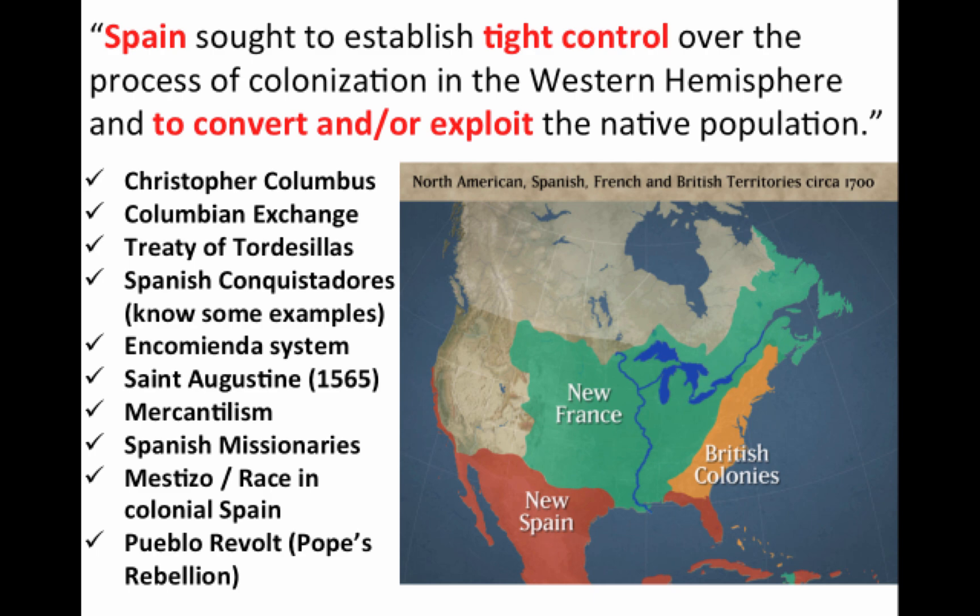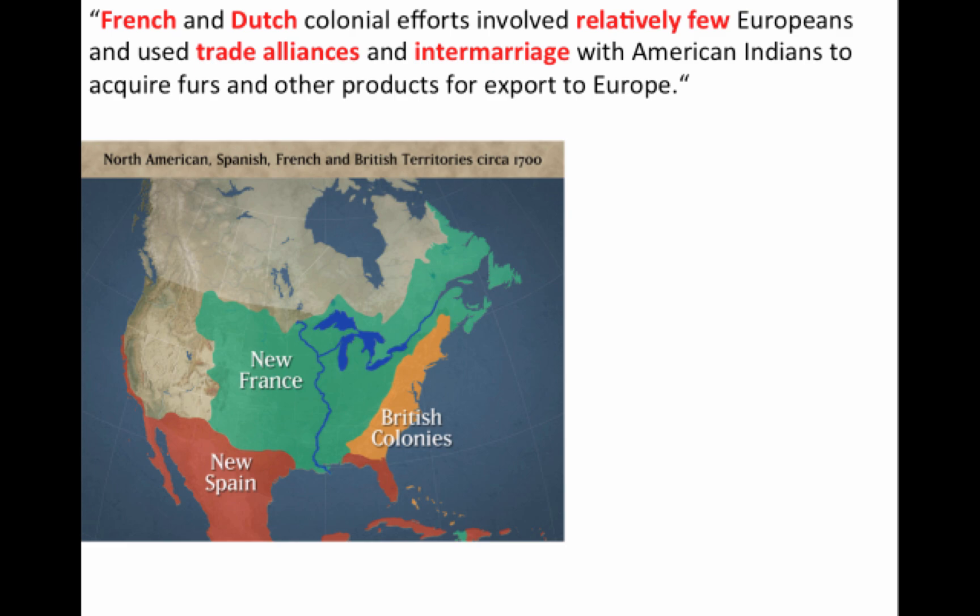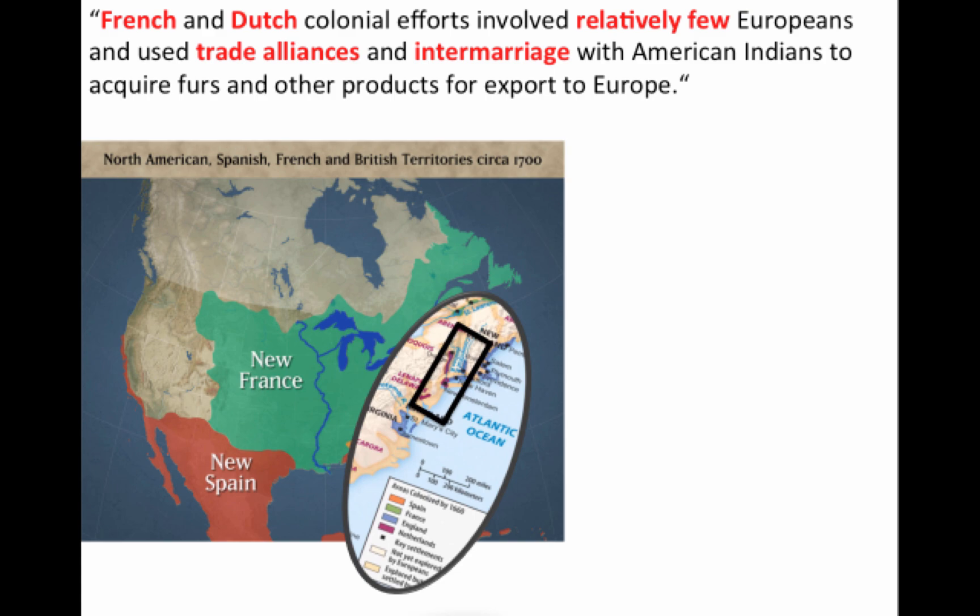What about the French? France controlled a lot of territory — all that green New France on the map. The Dutch were also present in what is today New York, known as New Netherlands. France and the Dutch shared something in common: relatively few Europeans came over, mainly men, looking for trade alliances with native people, mainly regarding the fur trade. As a result, intermarriage among native people and French and Dutch settlers was much more common than elsewhere in the colonization story.